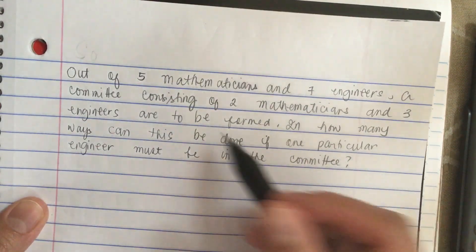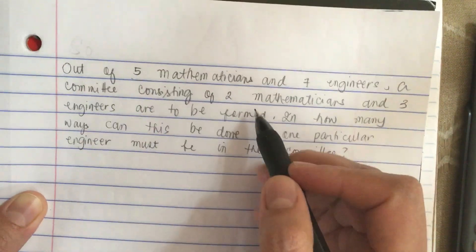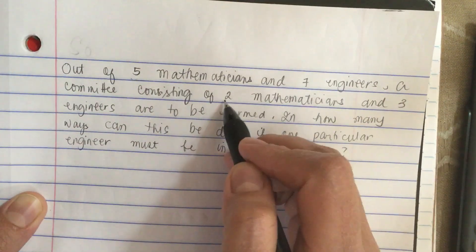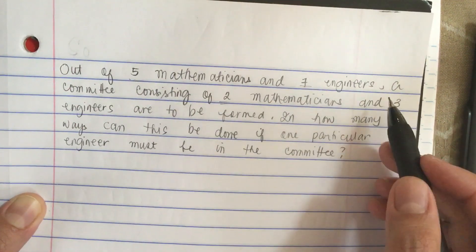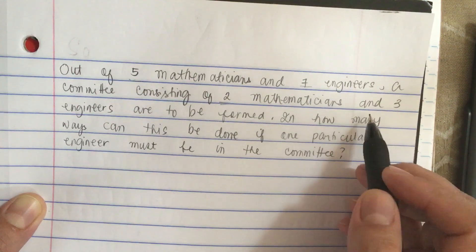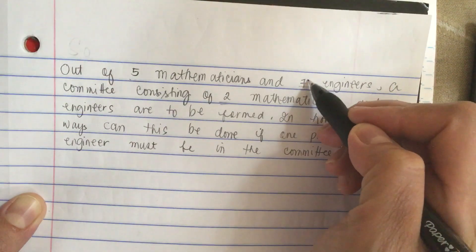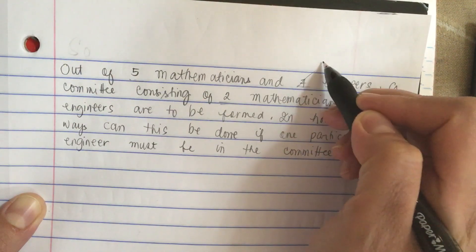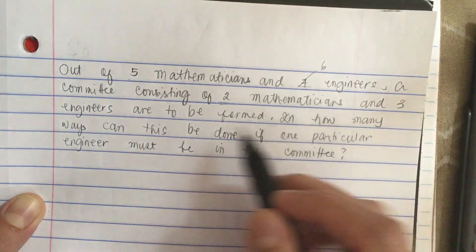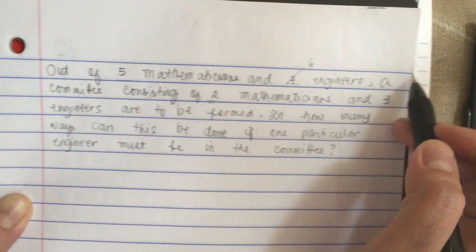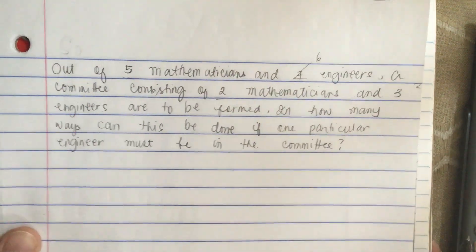The total number of mathematicians is five and we want to choose two of them. For the engineers, there are seven, but since one engineer must be in the committee, this reduces to six, and we then choose two instead of three.